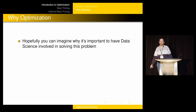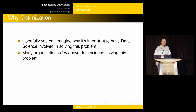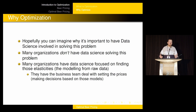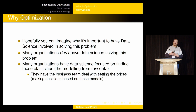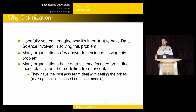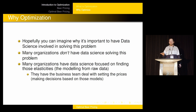Unfortunately, many organizations don't have data science solving this problem, even organizations that have a data science team. What I've seen in practice is that the data science team is really focused on building the model — finding out what the price elasticity is, looking at historical prices and volumes to understand how prices and volumes are related. And then they stop there, turn the model over to the business team, and the business team isn't clamoring for data scientists to get involved in setting prices. They think they know best because they've been doing it for years, and they're really good at it. They're just not as optimal as they could be if they were using math and data science.